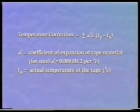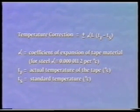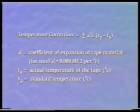For a line measured as L, the temperature correction is given by alpha L multiplied by (TF minus TS). Where alpha is the coefficient of expansion of the tape material — typically 0.0000112 per degree C for steel — TF is the actual temperature of the tape, and TS is the temperature at which the tape was calibrated. The temperature correction can be positive or negative depending on the values of TF and TS.